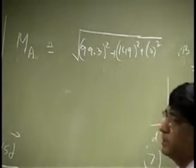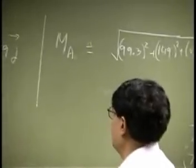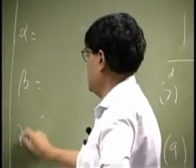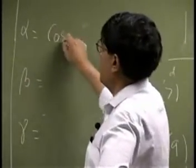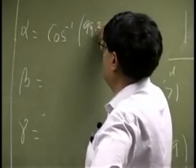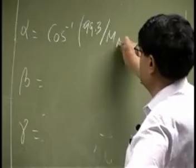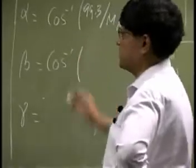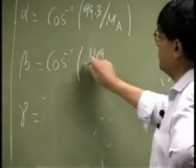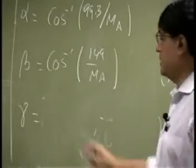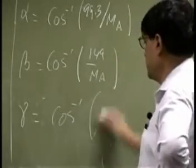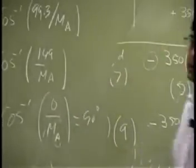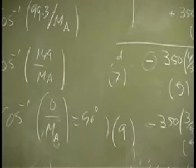That will give you the magnitude. From the directions, you will have alpha, beta, and gamma. So that's cosine inverse 99.3 divided by the magnitude which is MA. You're going to find this here, then you have cosine inverse 149 divided by MA, then cosine inverse 0 over MA, and that will be 90 degrees.